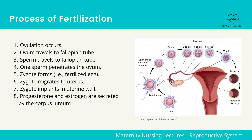Let's talk about the process of fertilization, which takes seven to ten days and involves eight steps. One: ovulation occurs. Two: ovum travels to the fallopian tube. Three: sperm travels to the fallopian tube. Four: one sperm penetrates the ovum.